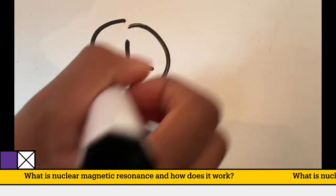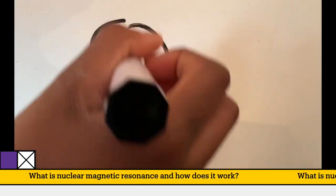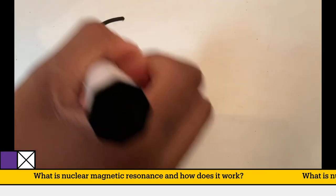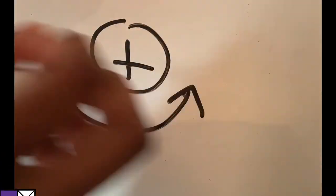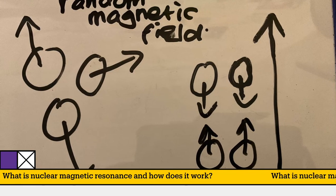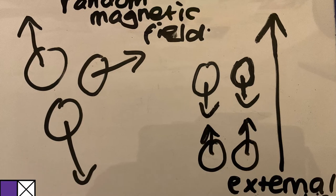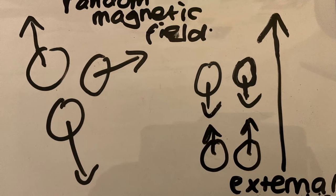The protons in the nuclei means that the nuclei is a positively charged particle which is able to spin on its own axis. This allows the nuclei to create its own magnetic field which would normally have a random orientation. However,